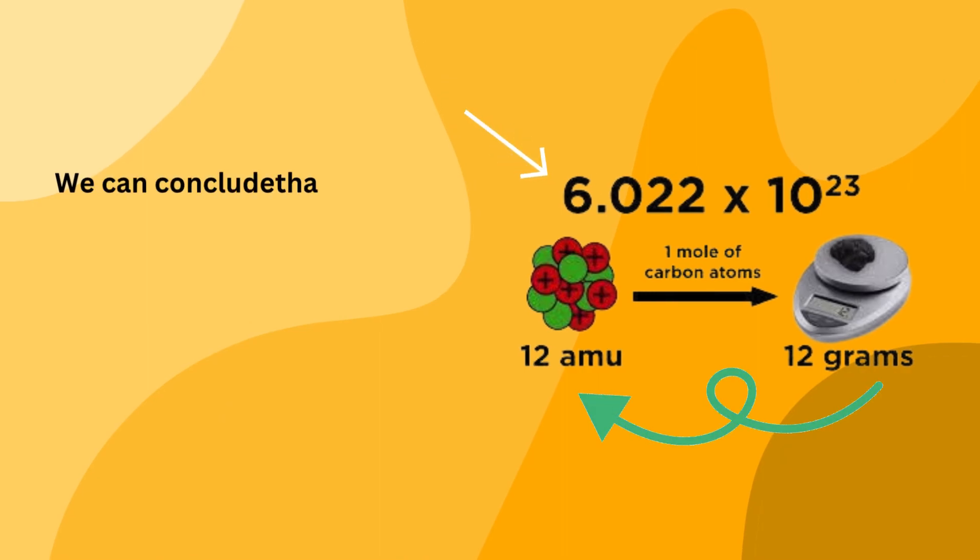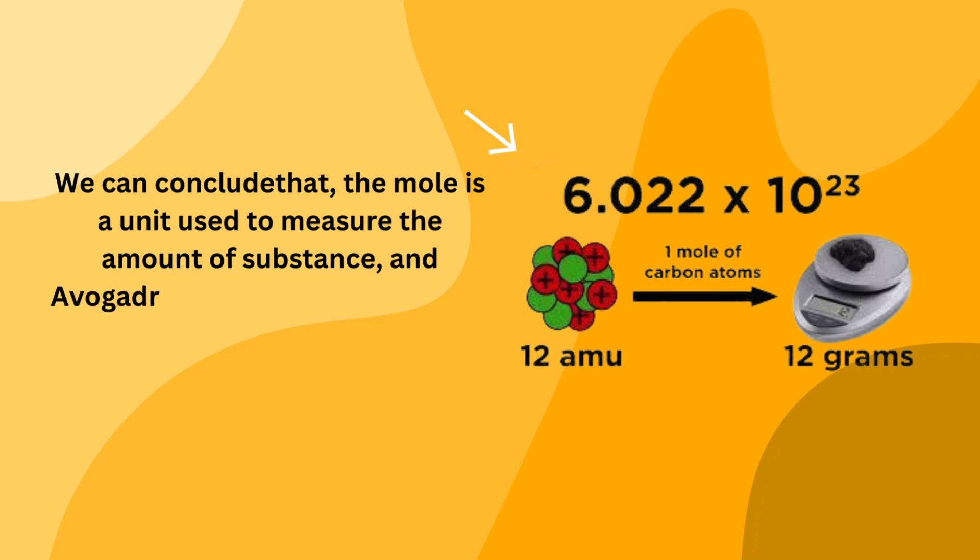We can conclude that, the mole is a unit used to measure the amount of substance, and Avogadro's number is the specific quantity of entities, atoms, molecules, etc., in 1 mole of a substance.